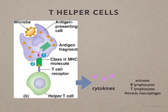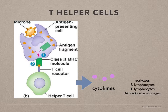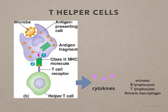T helper cells are activated by antigens on the body's cells that are recognized by their T receptors. They then divide to form memory cells and also release cytokines. Cytokines are protein molecules which act as messengers. They stimulate appropriate B cells to divide into plasma cells that secrete antibodies, activate T cytotoxic cells, and stimulate vigorous phagocytosis by macrophages.